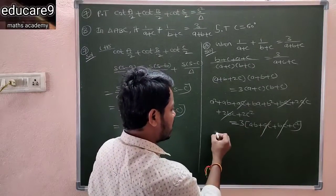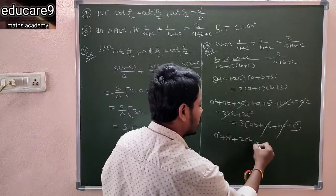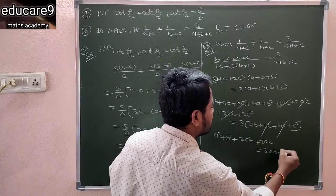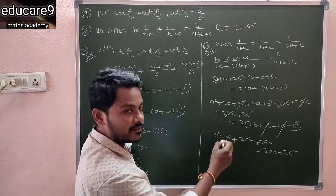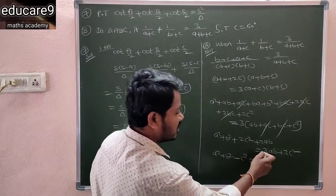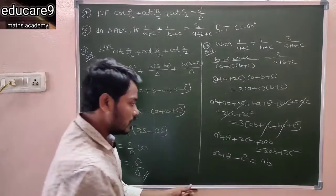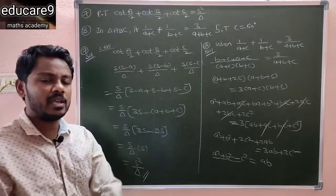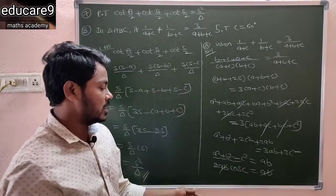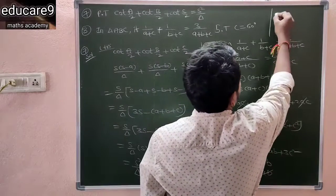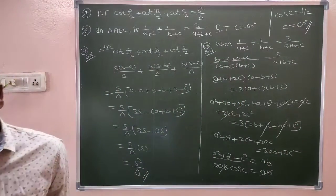Simplifying both sides: the terms 2ac and ac give 3ac (which cancel with the right side's 3ac), and 2bc and bc give 3bc (which cancel). What remains is a²+b²+2c²+2ab equals 3ab+3c². Rearranging: a²+b²-c² equals 3ab-2ab equals ab. You know from the cosine rule that a²+b²-c² equals 2ab·cos C. So 2ab·cos C equals ab, giving cos C equals 1/2, therefore C equals 60°.